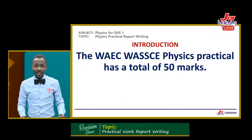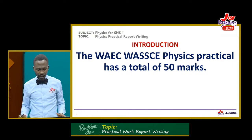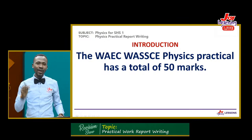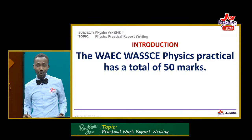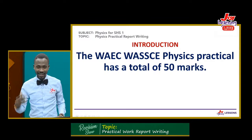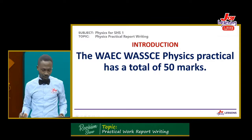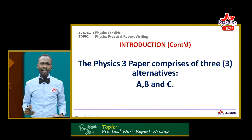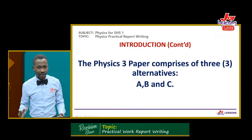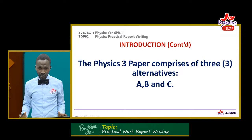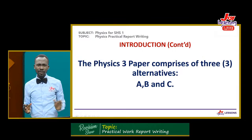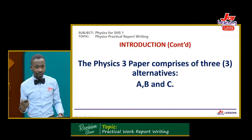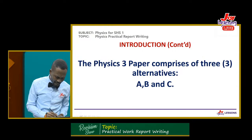The WASSCE Practical has a total of 50 marks, and the good news is that you can score all 50 marks — 45, 46, 47, 49, 50. You have three questions and you are supposed to answer two out of the three. With 50 marks total, each of the questions carries 25 marks.